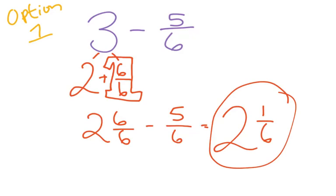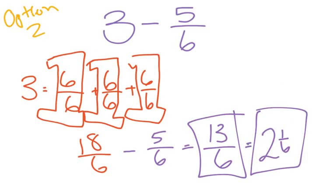Because it's the same problem, 3 wholes minus 5 sixths, but I just solved it in two different ways. You don't need to go back and forth between the two of them. You can pick the one that you like better and stick with that strategy.